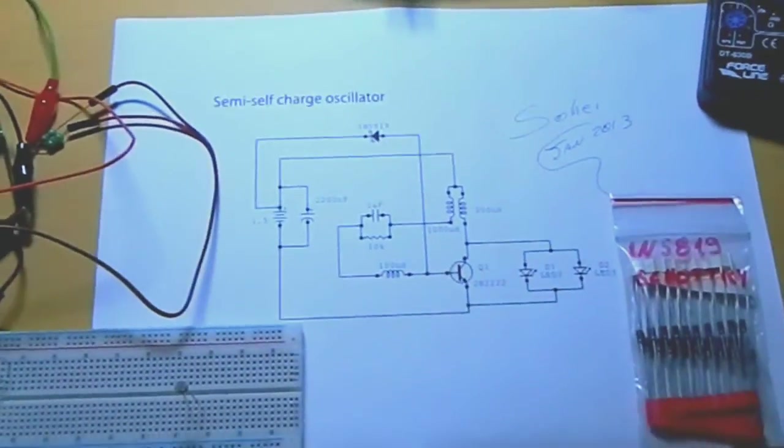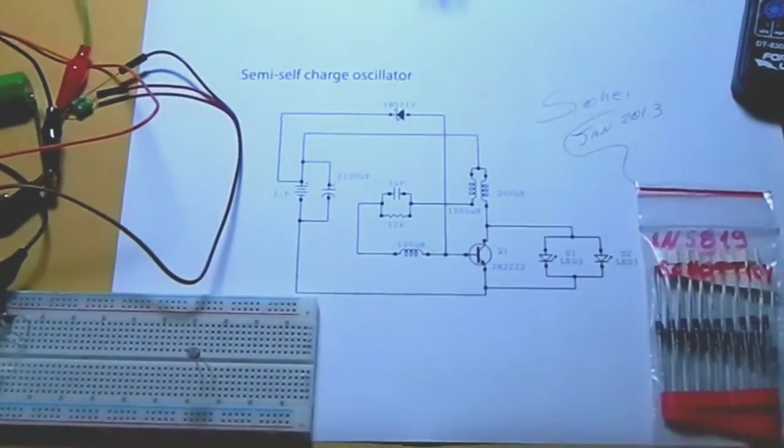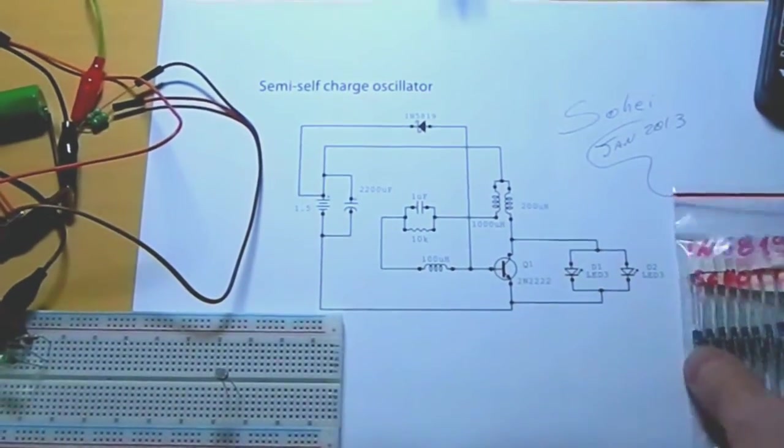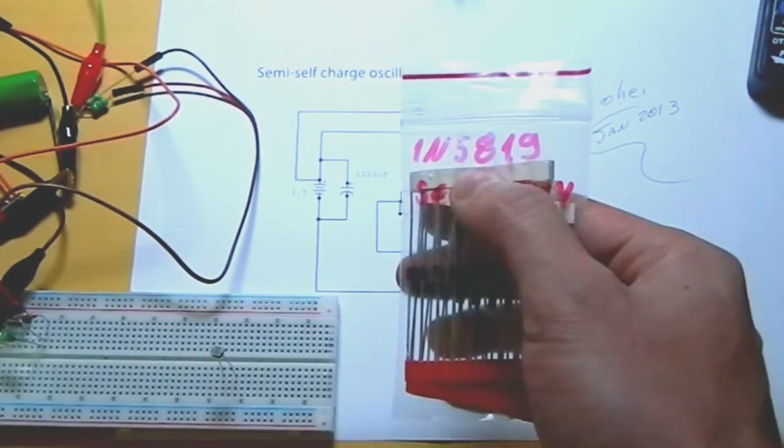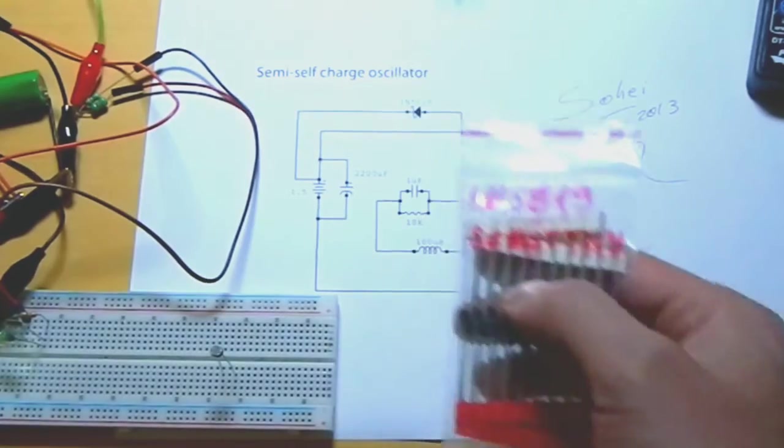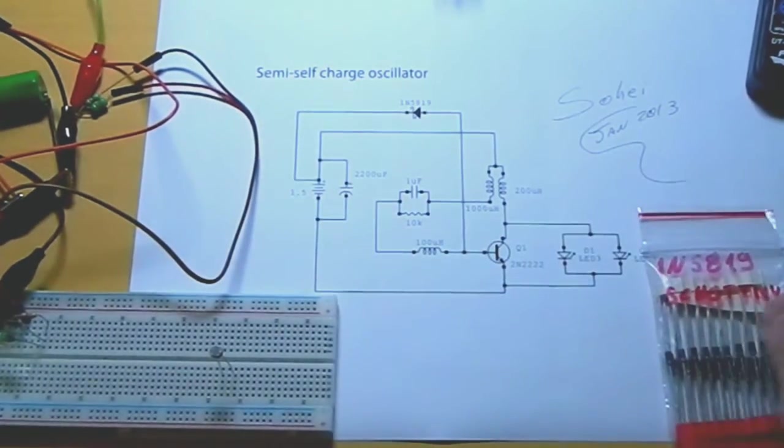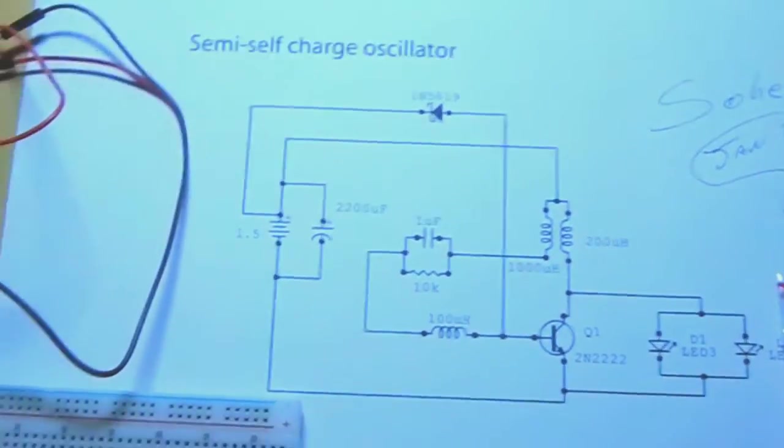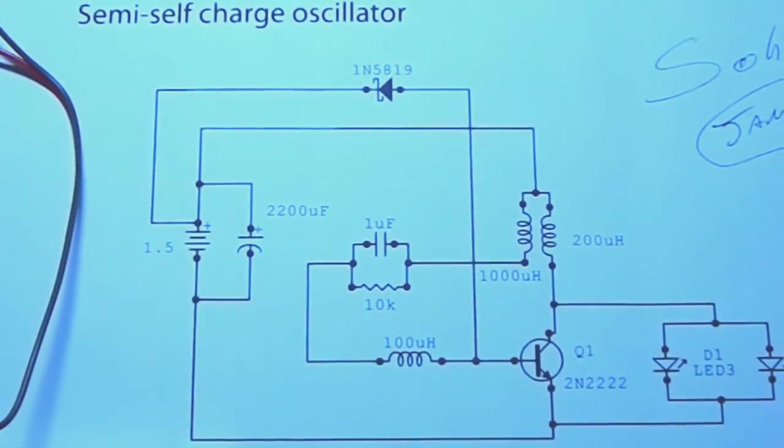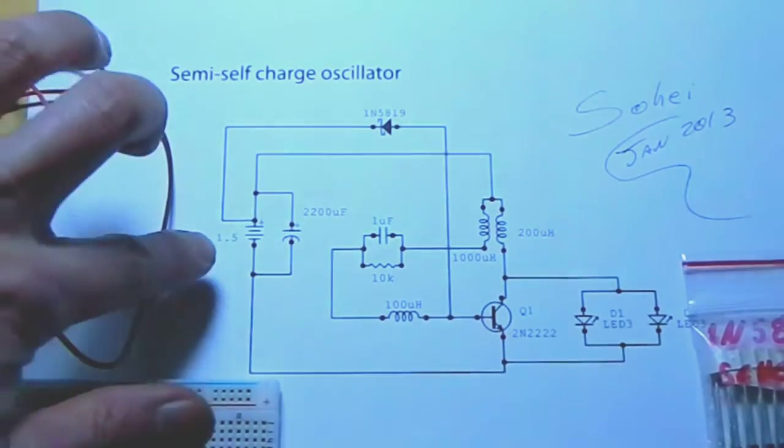So here is the schematic of this circuit. I'm using this brand new, I received 1N5819 Schottky diodes. And here is the circuit that I'm testing. With all the values on it. Here is the battery.